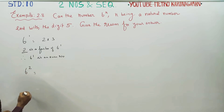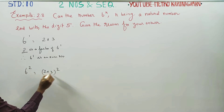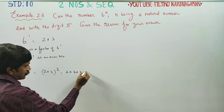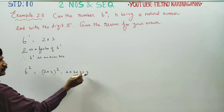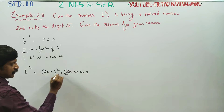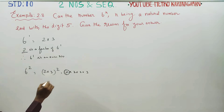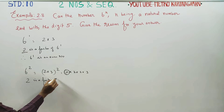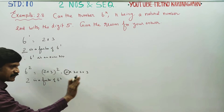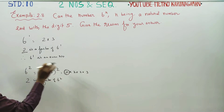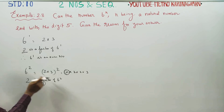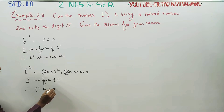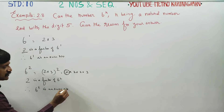6 square: 6 square is 2 into 3, whole square. This can be written as 2 into 3 into 2 into 3. 2 is a factor of 6 square, so 6 square is an even number.